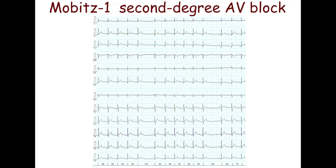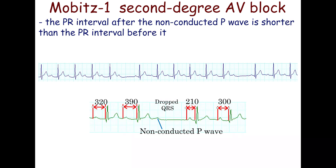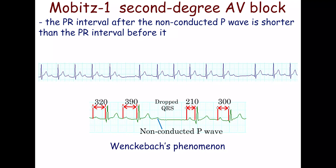Type 1, also called Mobitz 1, second-degree atrioventricular block is characterized by progressive prolongation of the PR interval, which results in a non-conducted P wave — a dropped QRS complex. The main clue is that the PR interval after the non-conducted P wave is shorter than the PR interval before it. Usually, the PR interval after the non-conducted P wave is shortest and before it is longest. This is called the Wenckebach phenomenon.